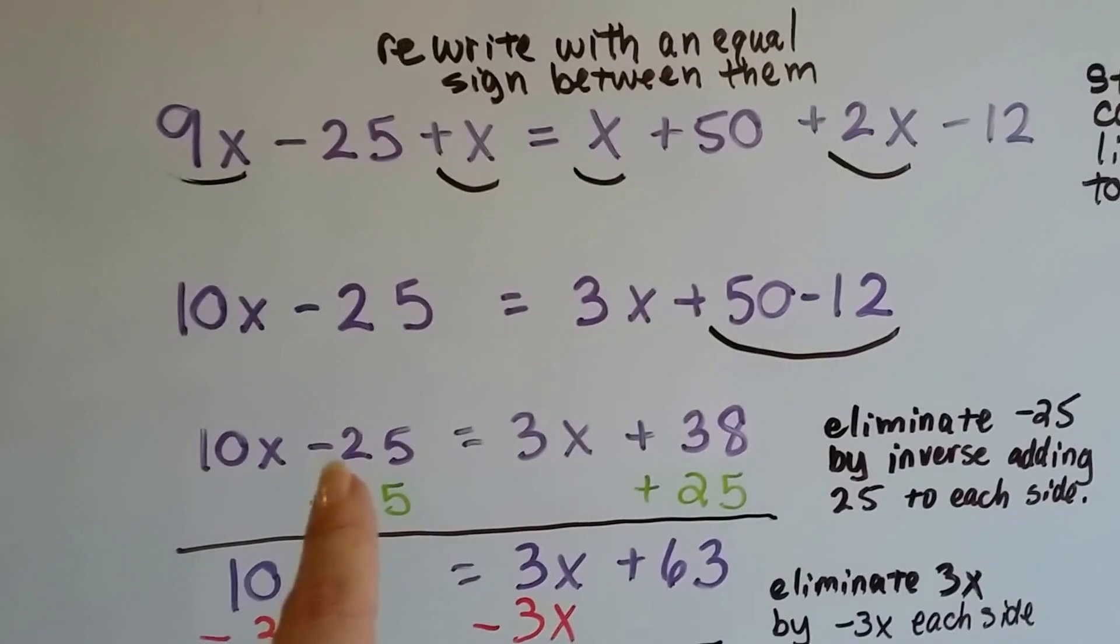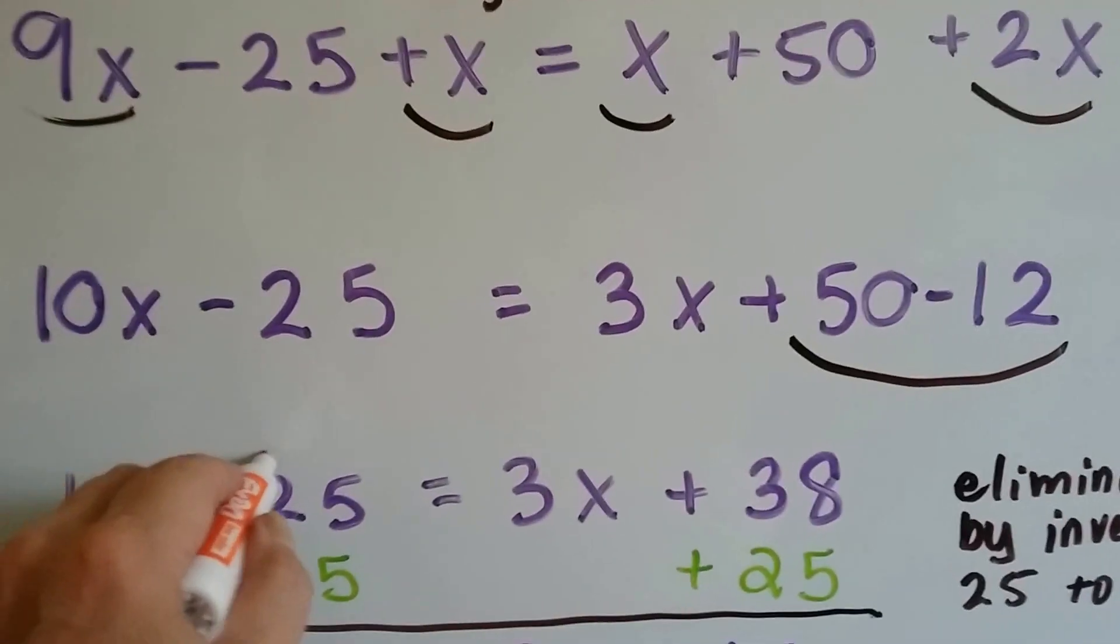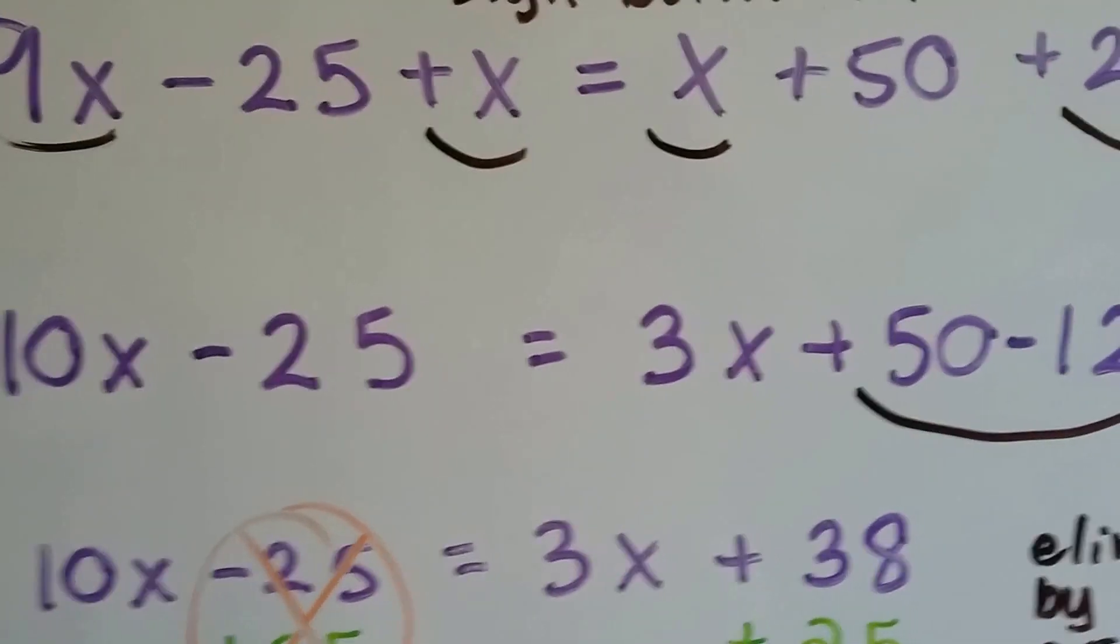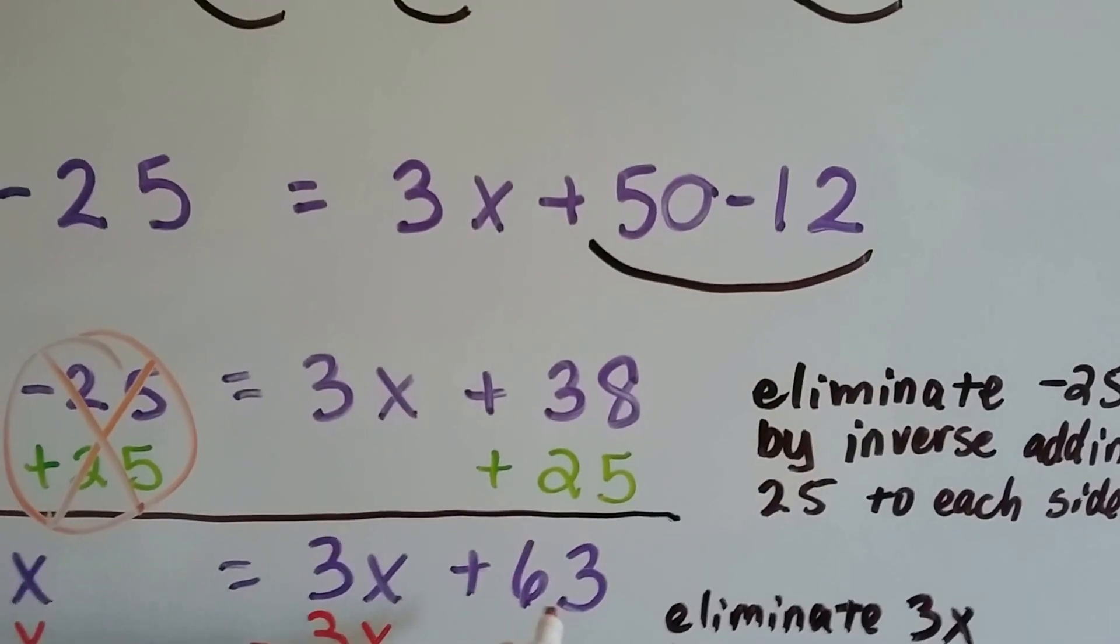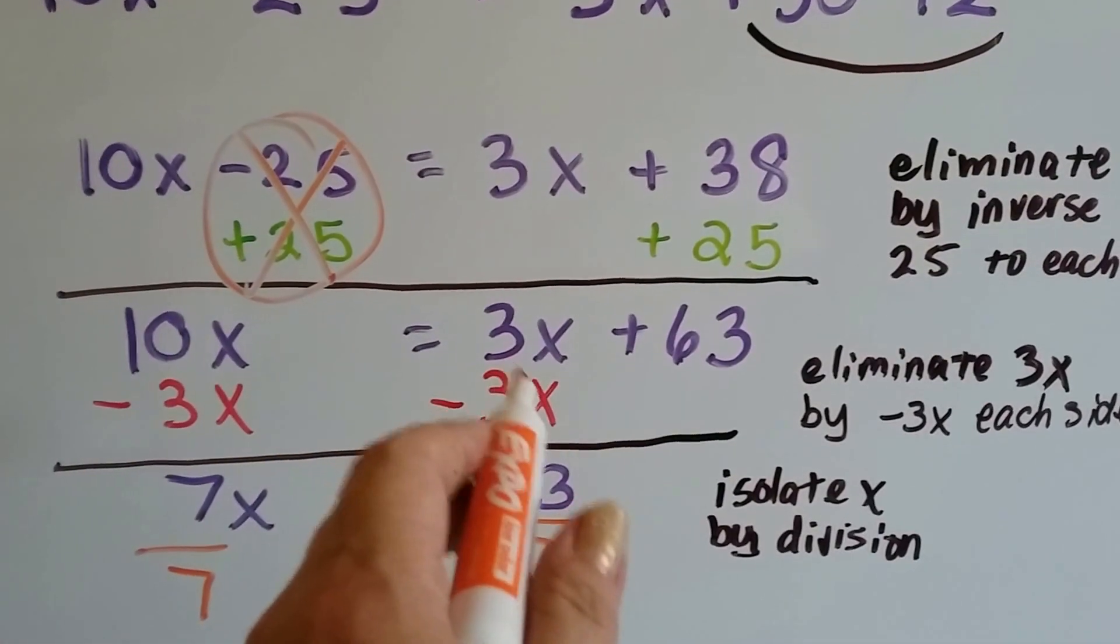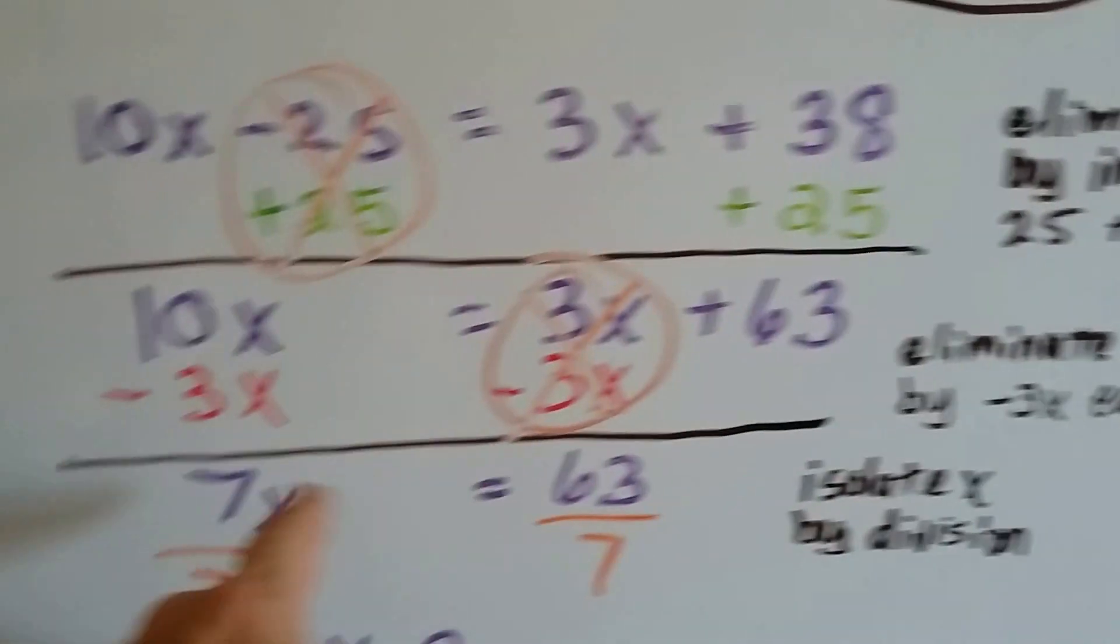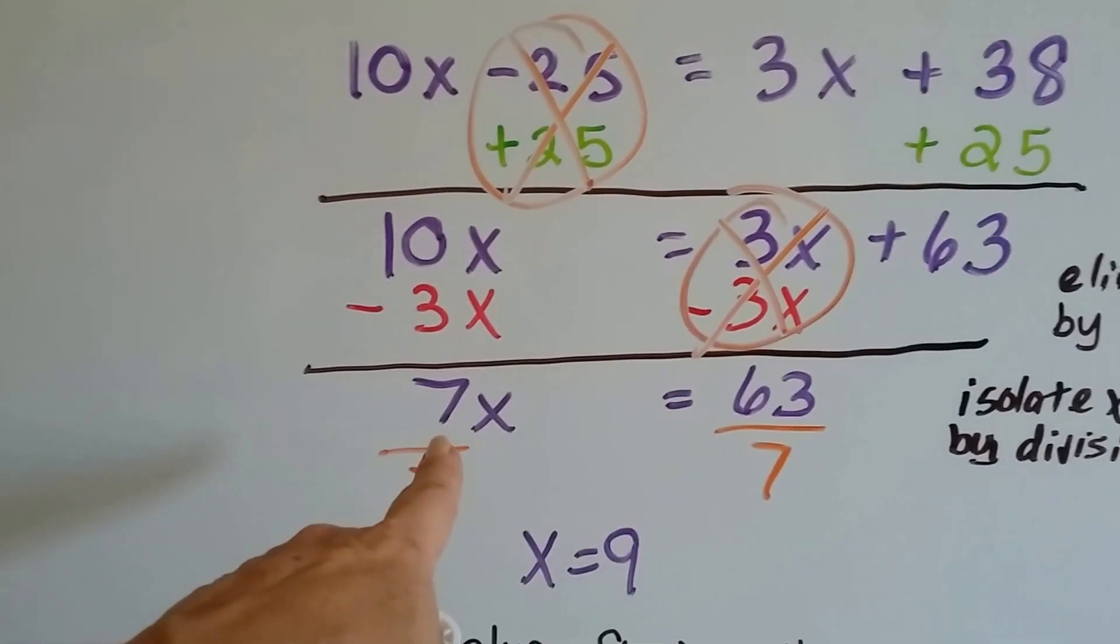We can eliminate that minus 25 by adding 25 to each side. That'll create a zero pair and cancel that out. 38 plus 25 is 63. Now we can eliminate that 3x by subtracting 3x on each side. That creates another zero pair. And 10x minus 3x is 7x.